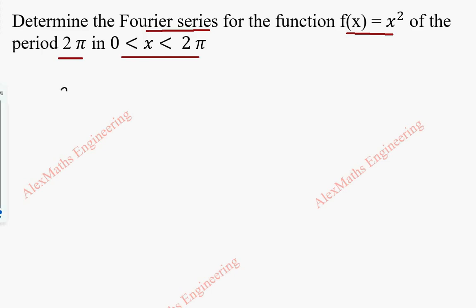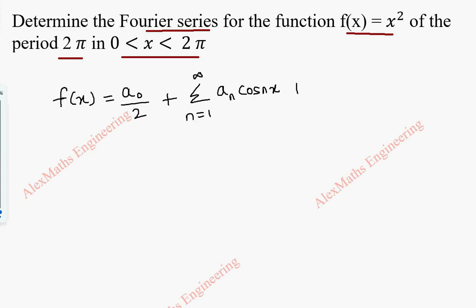we are going to write the formula for the Fourier series, which is f of x equal to a₀ by 2 plus sigma n equal to 1 to infinity aₙ cos nx plus sigma n equal to 1 to infinity bₙ sin nx.